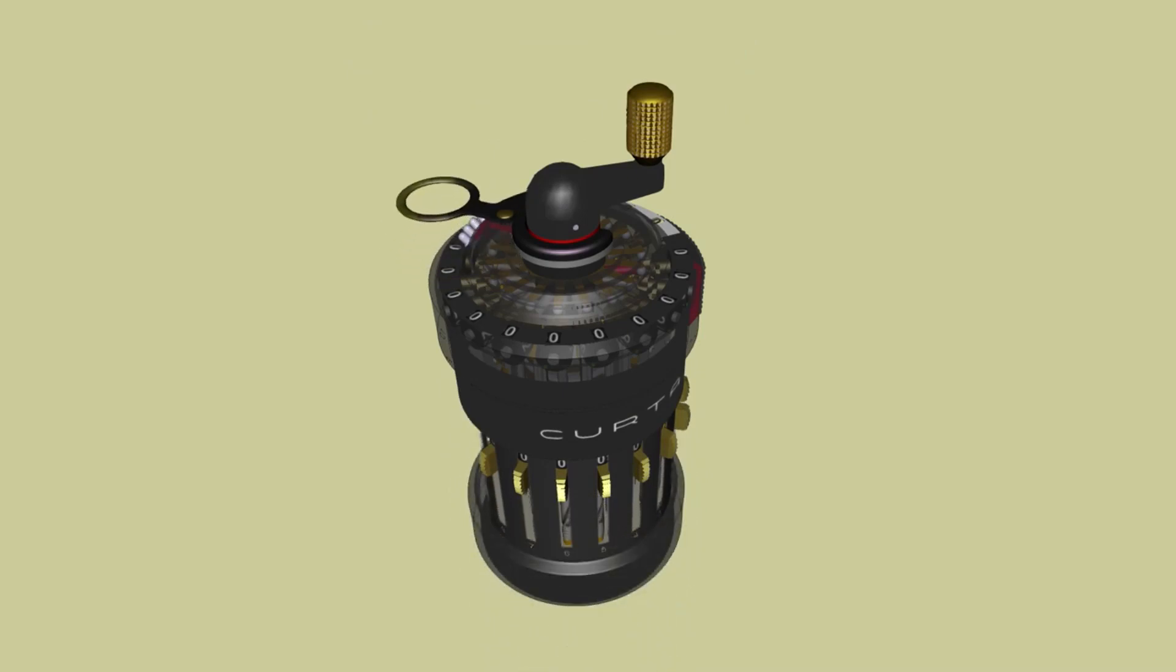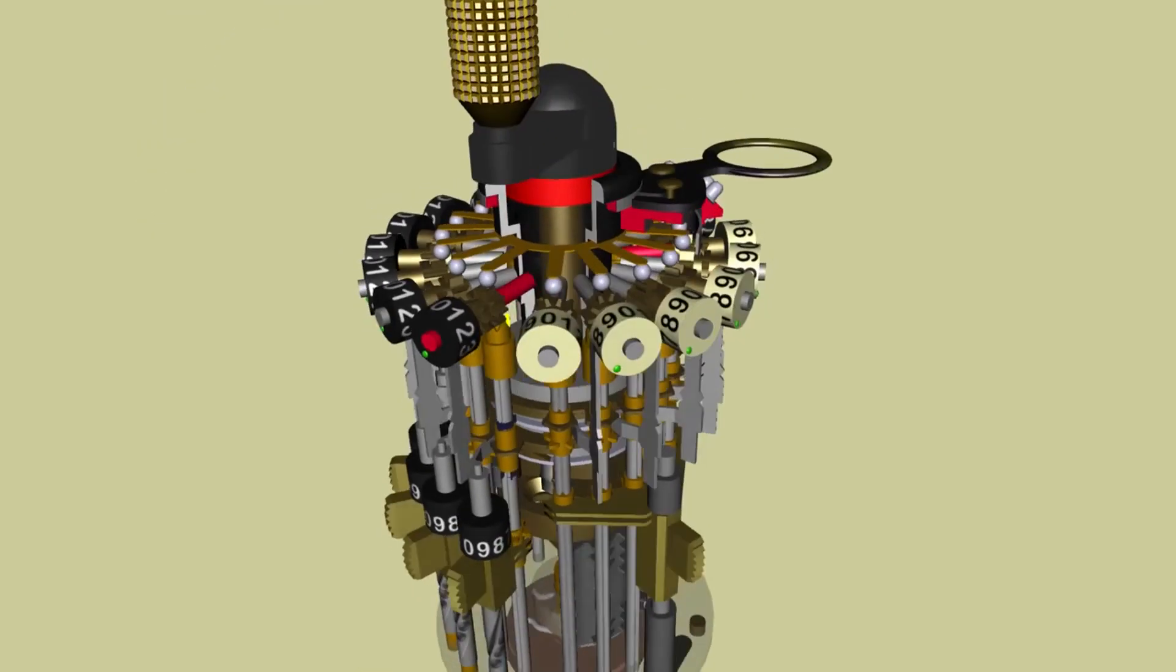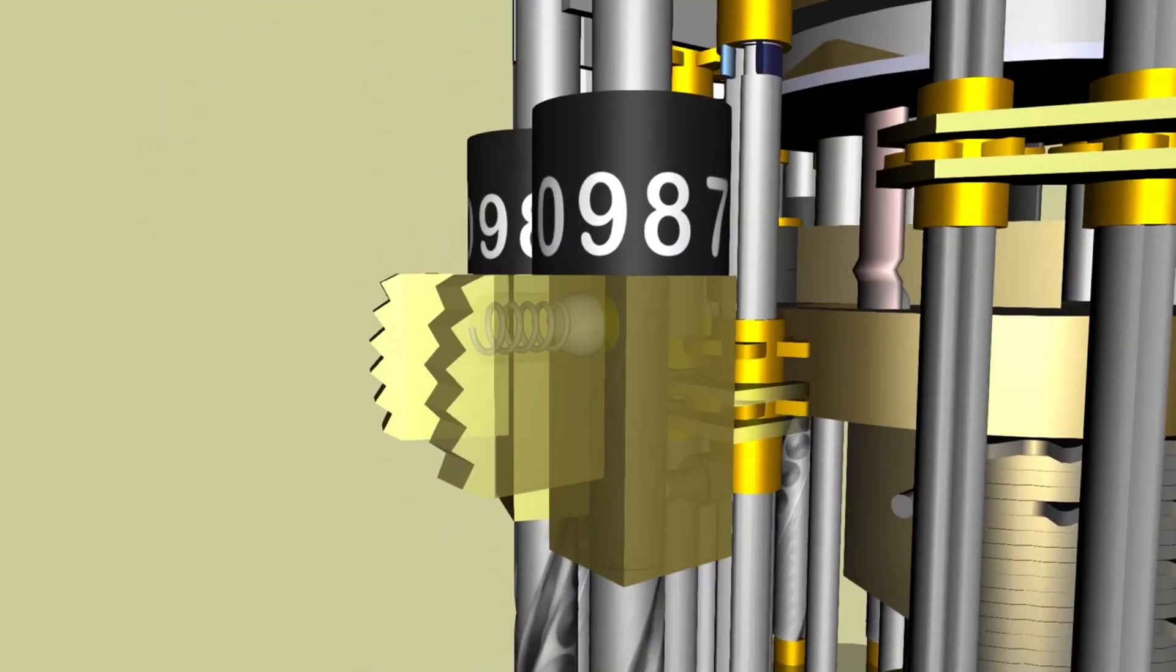Bra-ket notation, or Dirac notation, is a standard mathematical framework in quantum mechanics. States, or kets, are denoted |ψ⟩.